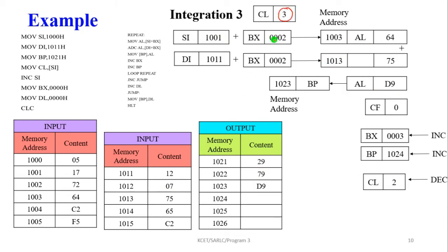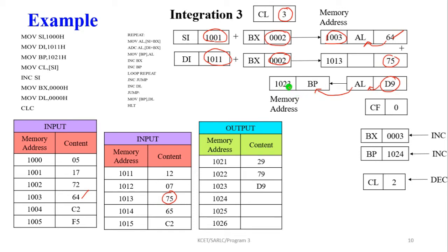Third iteration: CL is 3, byte pointer is 0002. SI is 1001, DI is 1011. Memory address = 1003. Value at 1003 is 64, moved into AL. Memory address 1013 contains 75. Adding 75 + 64 gives D9. The answer D9 is stored in AL, then moved into result pointer memory location 1023.